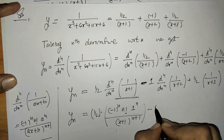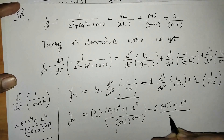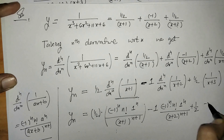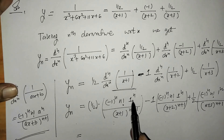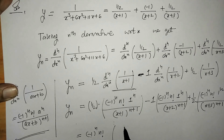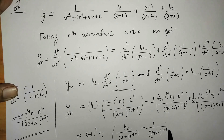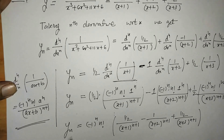Similarly we apply the formula to the next terms: (-1)^n · n! · 1^n / (x+2)^(n+1) and the same for the third factor. Since 1^n = 1, we take the common factor outside, giving: y_n = (-1)^n · n! · [1/2 · 1/(x+1)^(n+1) − 1/(x+2)^(n+1) + ...]. So we have obtained the nth derivative of the given first function.